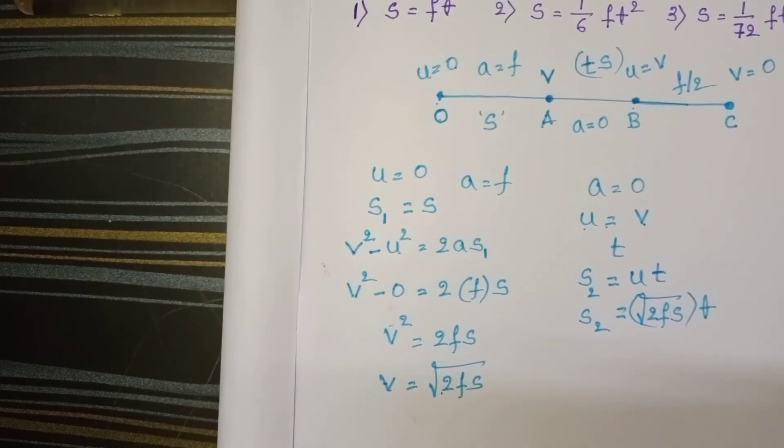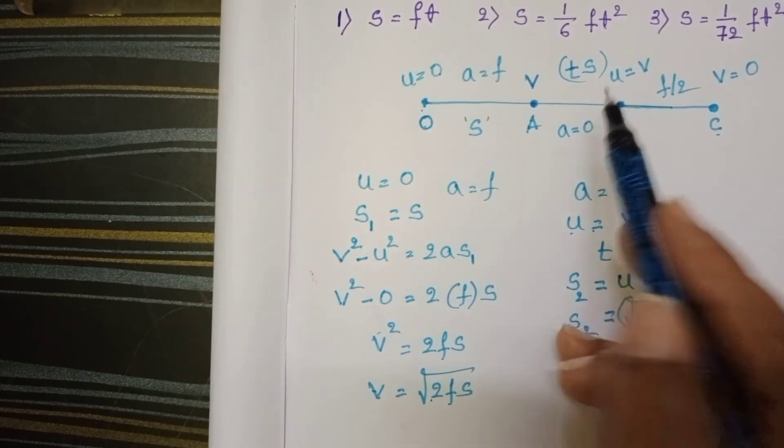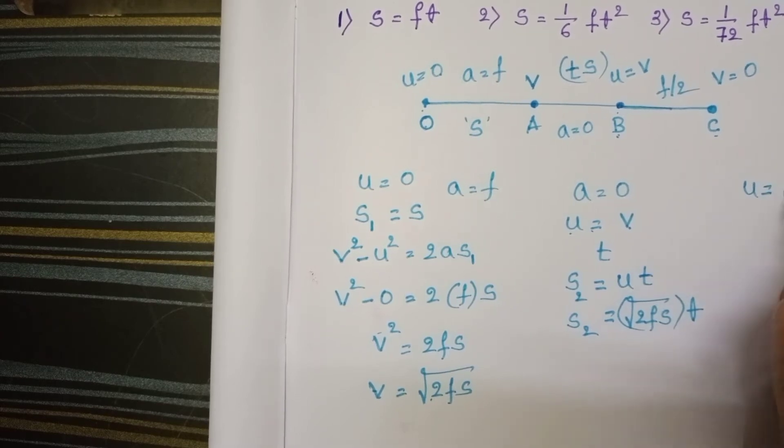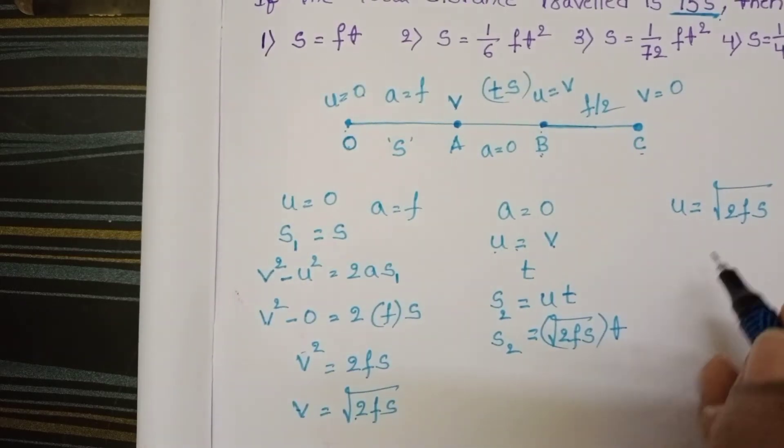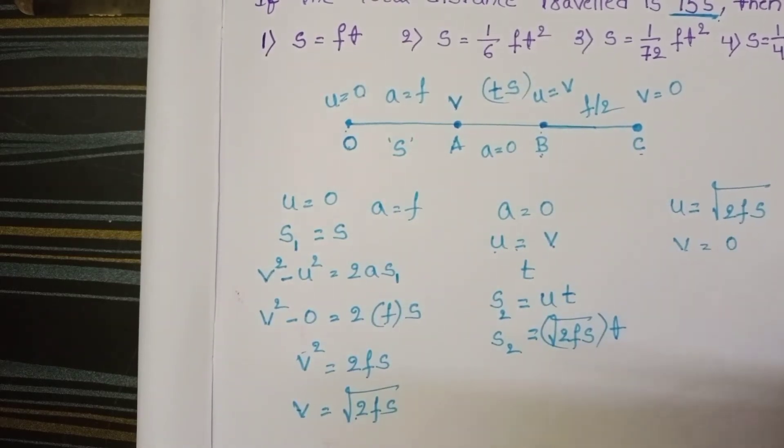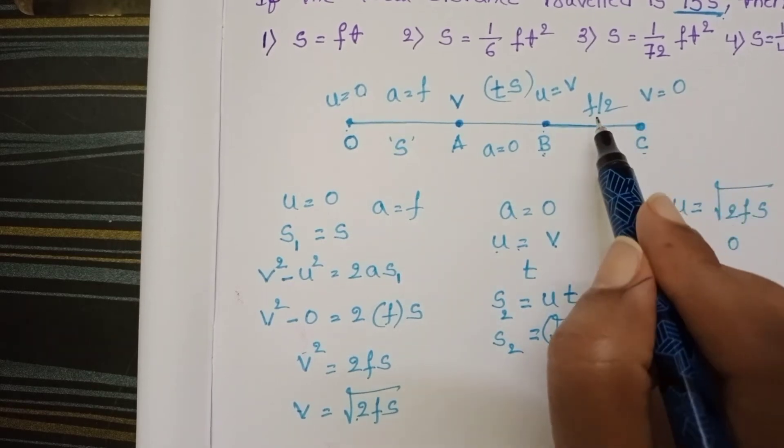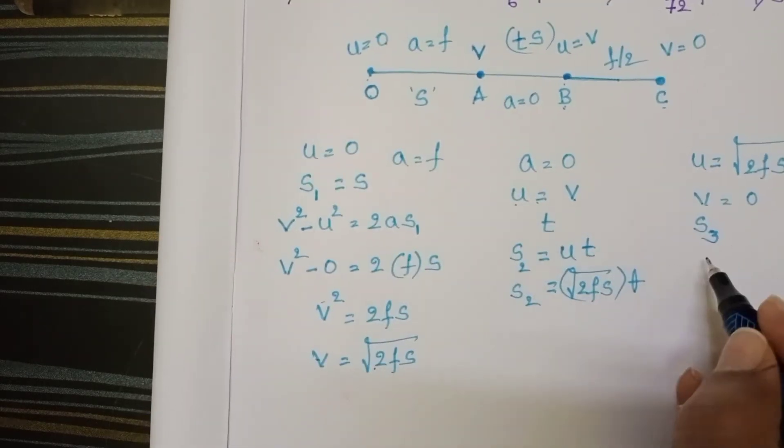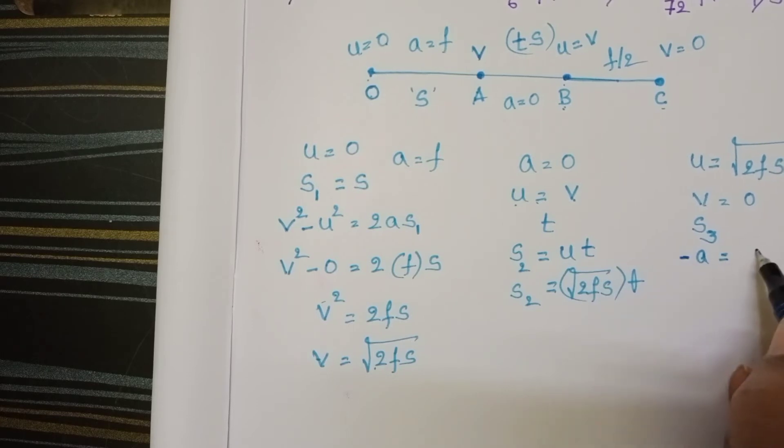And now from b to c, at b point, initial speed is v = √(2fs) and final speed is 0. Distance traveled, let it be s3. And here this is deceleration. So acceleration a becomes -a, which is -f/2.